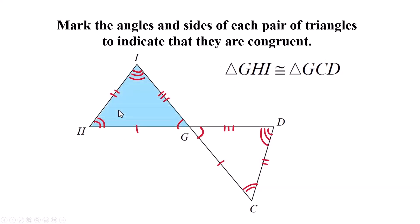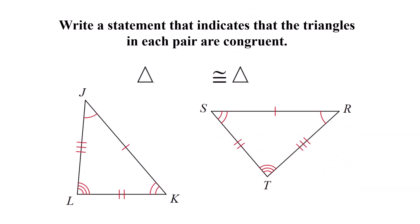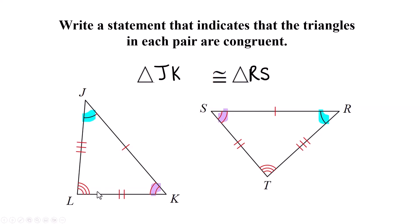Now I've got a pair of congruent triangles that are marked up, but the congruency statement hasn't been written — so we have to write it. We start with the first angle: J is marked with one arc, so J goes first, and R goes first for the other triangle. Then the angle with two marks: K and S. Then three marks: L and T.